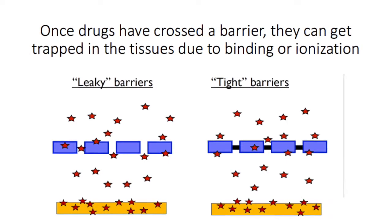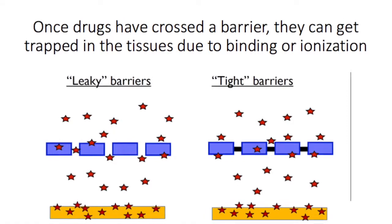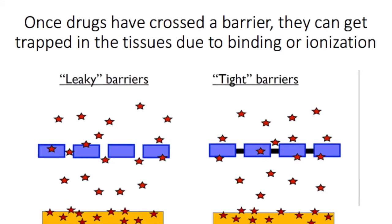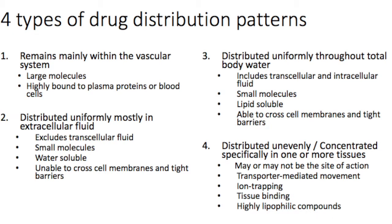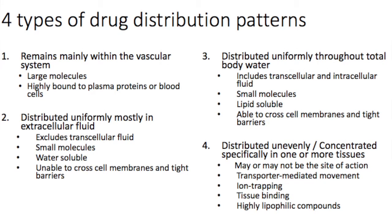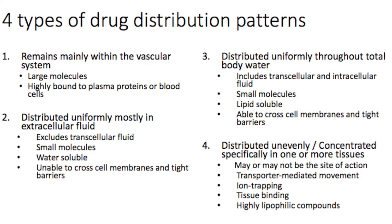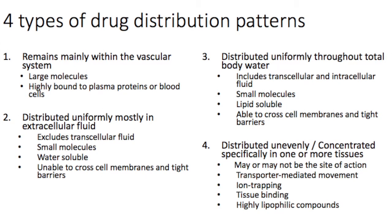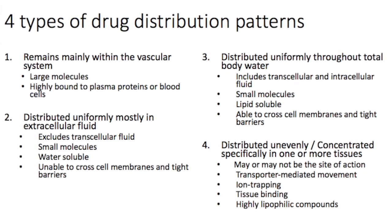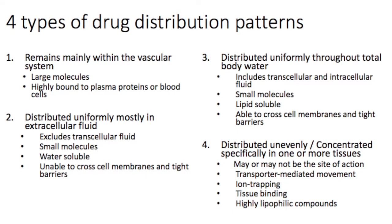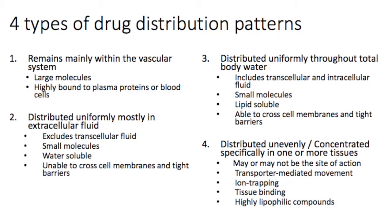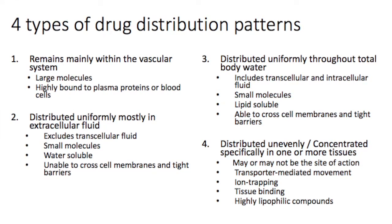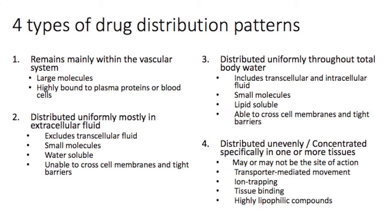Another factor to consider is that once a drug crosses an epithelial barrier into the tissues, it can become trapped in that tissue, either by binding to components in that tissue or through ionization. So we tend to see four patterns of drug distribution. The first is for drugs that mainly remain in the central compartment — large hydrophilic molecules or drugs with a high proportion bound to plasma proteins — and they have a small volume of distribution. Second, drugs that distribute uniformly mostly through extracellular fluid to tissues with leaky barriers; these are small molecules that are not highly bound to plasma proteins but tend to be hydrophilic, and their volume of distribution tends to equal the volume of extracellular fluid.